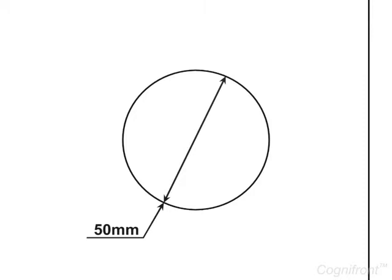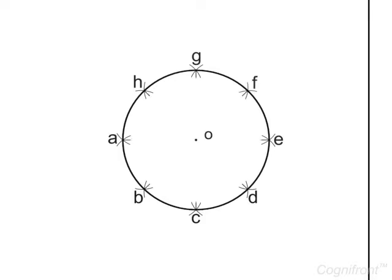Here, plan of the cone is a circle which gives the true shape of base of the cone. We will divide it into 8 equal parts along the circumference.